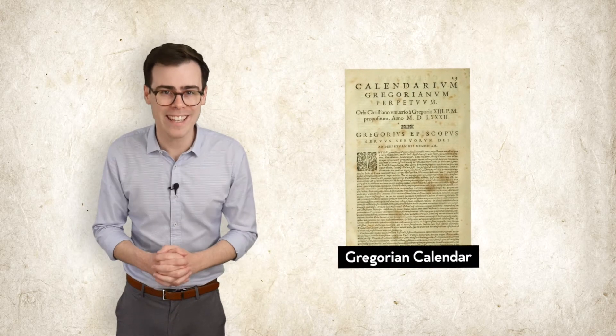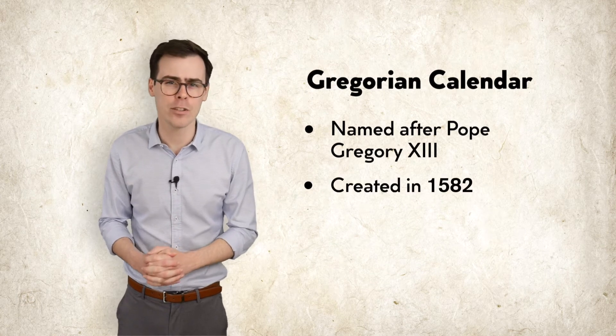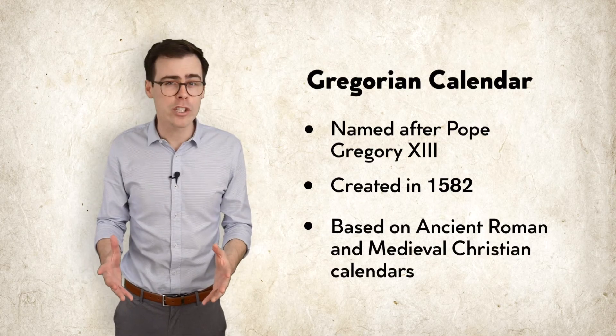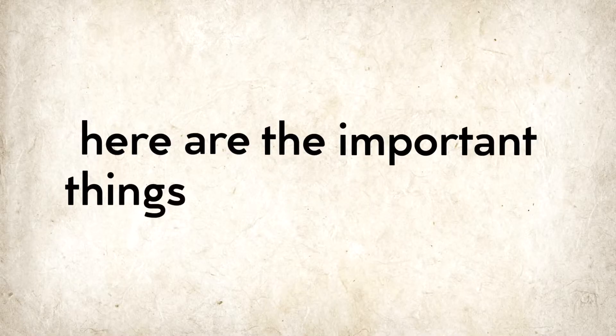Today the system we use to record dates is called the Gregorian calendar. It was named after Pope Gregory and although it was created in 1582, it was based off the calendars of the ancient Romans and medieval Christian monks. Here are the important things you need to know.